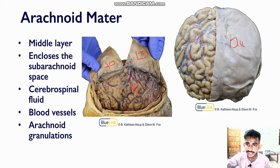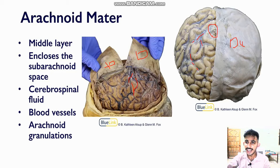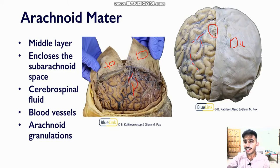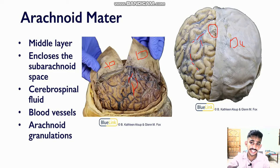Furthermore, in this image we can see the arachnoid granulations. Arachnoid granulations are specialized areas, or areas of contact, between the arachnoid mater and the dural venous sinuses. This is how our cerebrospinal fluid drains from the subarachnoid space into the dural venous sinuses and into the venous circulation. We already talked about dural venous sinuses when we talked about dura mater.